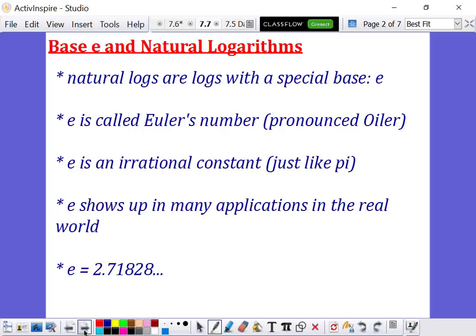So base E and natural logarithms. We need to talk for just a minute about base E and what that is. Natural logs are logs with a special base, and that base is E. E is called Euler's number. It's pronounced Euler. Euler's number E is an irrational constant, just like pi. So what this means is E means the same thing in every level of mathematics every time you use it.